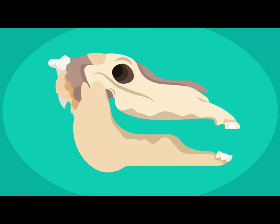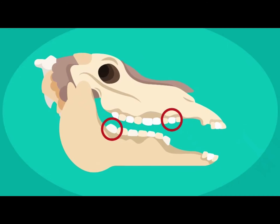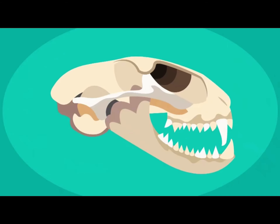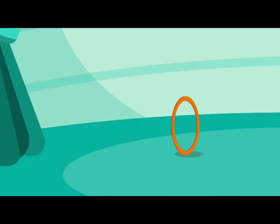Animals which eat plants have teeth like this. They're shaped to squash and grind. Meat-eating animals have teeth like this, for slicing and ripping. You should try giving him a steak.